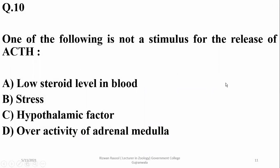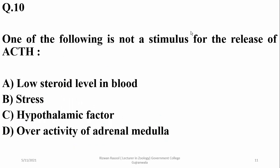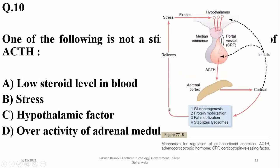Which of the following is not a stimulus for the release of ACTH? Adrenocorticotrophic hormone from the anterior pituitary is released under the stimulus of low steroid level in the blood, by direct stimulation of stress, and due to hypothalamic releasing factor. But adrenal medulla is not concerned with the release of adrenal cortex hormones. So D is the right option.